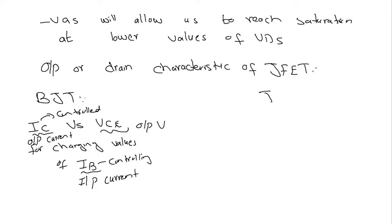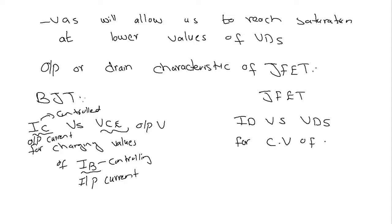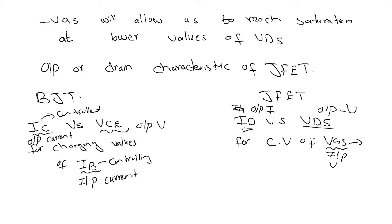Similarly, in the case of the JFET, the curve will be ID, which is the output current, versus VDS, which is the output voltage, for changing values of VGS, where VGS is the input voltage. VGS is the controlling parameter and ID is the controlled parameter. That is why we say that the FET is a voltage control device, because the input voltage VGS controls the output current ID, whereas the BJT is a current control device where the input current IB controls the output current IC.